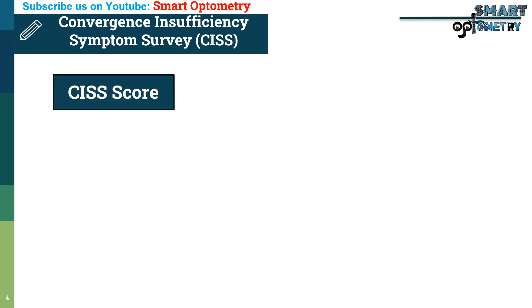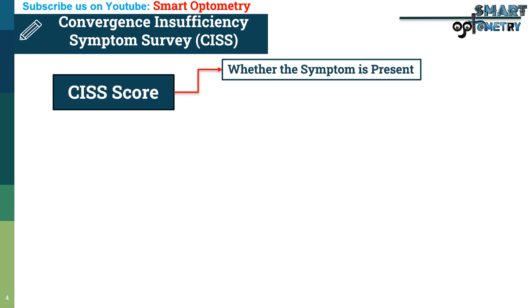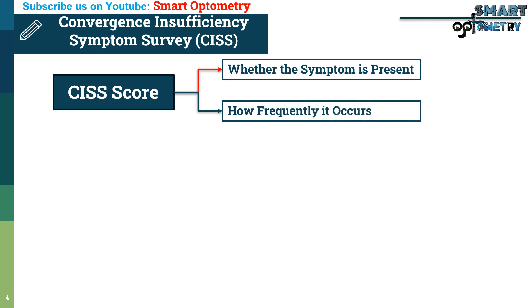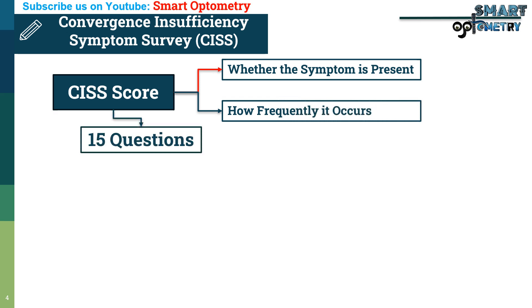The CISS allows a two-factor analysis of symptoms of convergence insufficiency: first, whether the symptom is present, and second, how frequently it occurs. The questionnaire consists of 15 items.